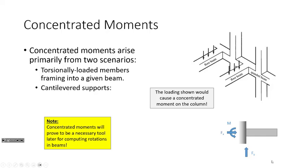Another way we see concentrated moments is in structures like a canopy, awning, or balcony. You have a load applied to the floor beam, and what I'll call a transfer girder is wanting to rotate, applying a concentrated moment to the vertical column at the point where it frames in. That's where we see concentrated moments in the real world.